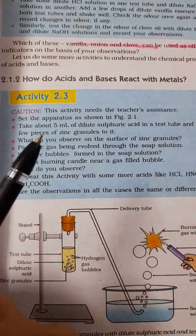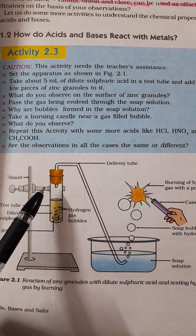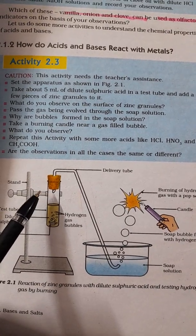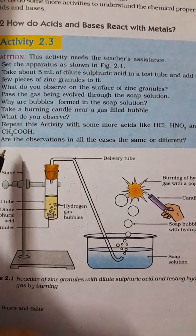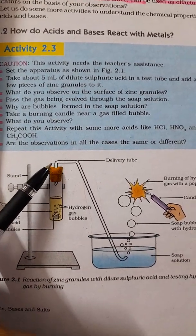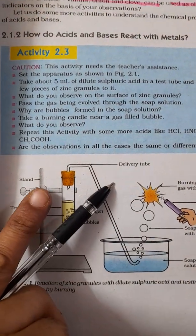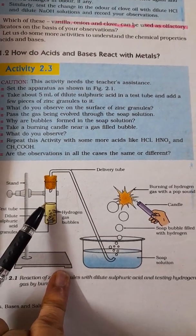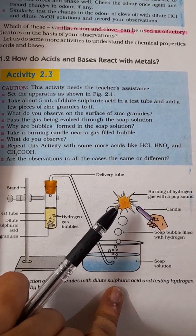Now we will do certain activities to understand the chemical properties of acids and bases. How do acids and bases react with metals? Take 5 ml of dilute sulfuric acid in a test tube, add a few pieces of zinc granules, and a gas will be formed. Pass the gas through the other end into a beaker containing soap solution and bring a burning candle near it. You can repeat this experiment with other acids like HCl and HNO₃. Hydrogen gas is formed — you can hear a pop sound because of the formation of hydrogen gas.